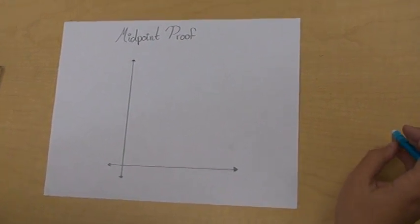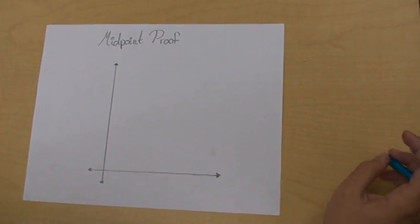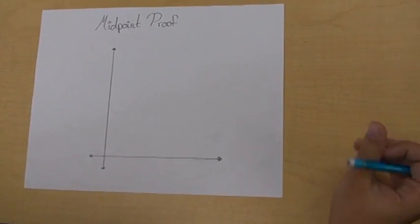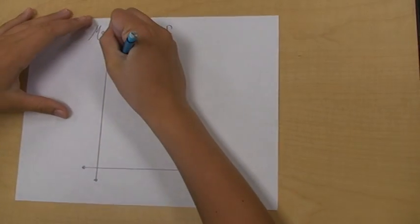This is our midpoint proof. To prove the midpoint between two points, we must first have two points: point 1 and point 2.